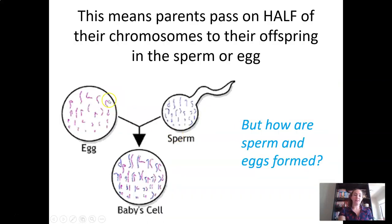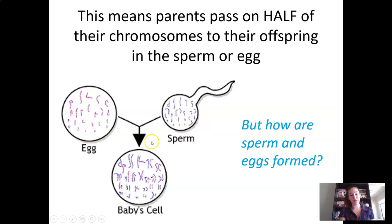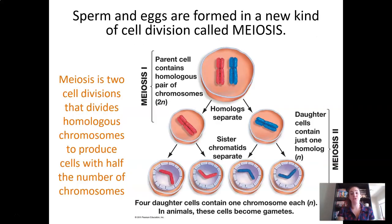What happens is an egg has half the chromosomes of the individual. So for humans, this would be 23. A sperm also has 23, and when they combine, they create a cell that has a full set of chromosomes. So let's take a closer look at how sperm and eggs are formed.